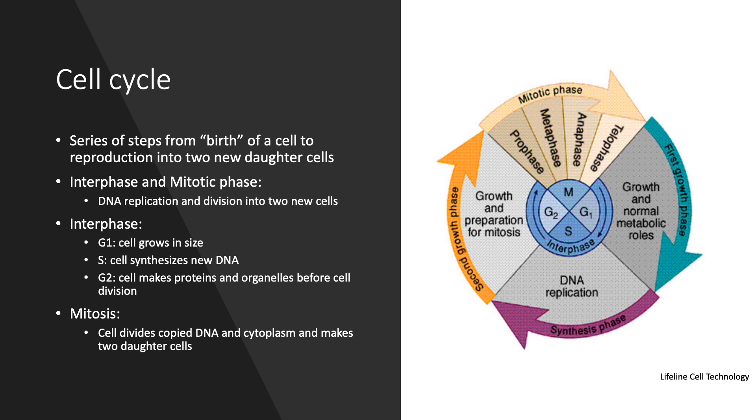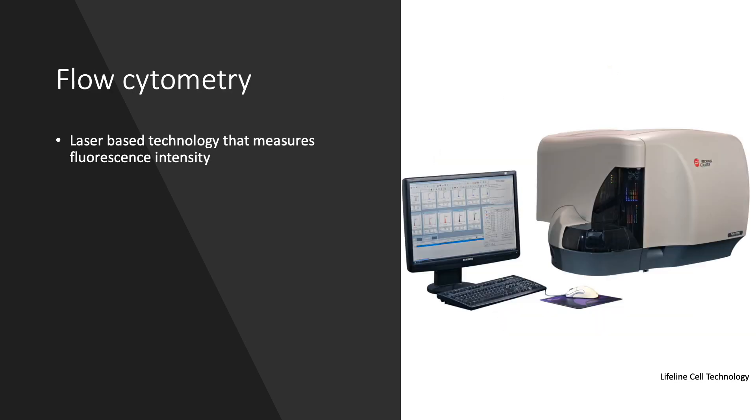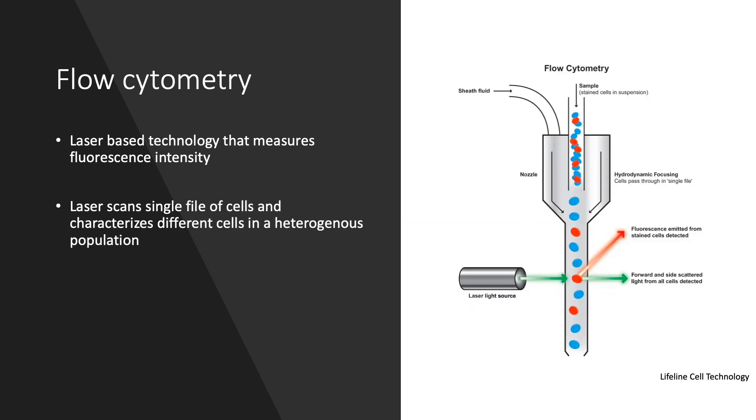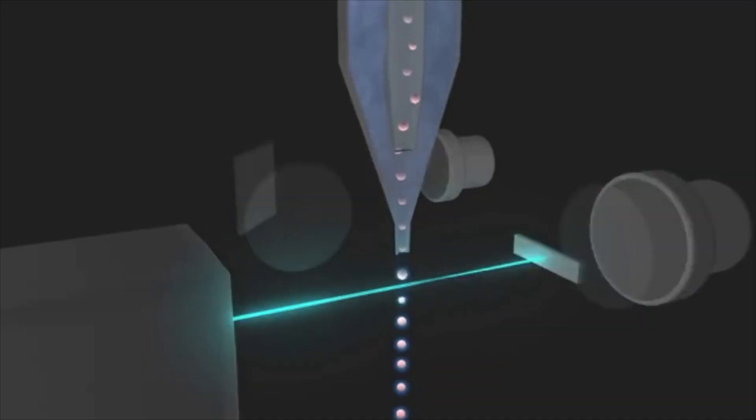When a new cell is created, the cycle begins all over. The most common way to study the cell cycle is with flow cytometry. This is a laser-based technology that measures fluorescence intensity. The basic principle of flow cytometry is that a single file of cells pass through a laser, which scans the cells and results in cell count and cell sorting, depending on expression of cell surface and intracellular molecules.